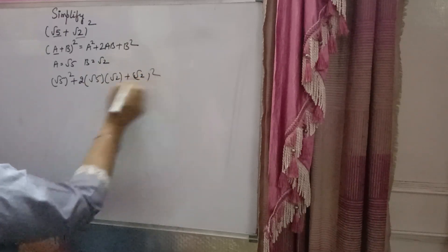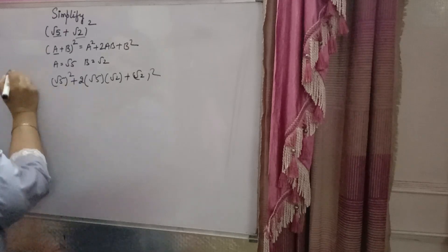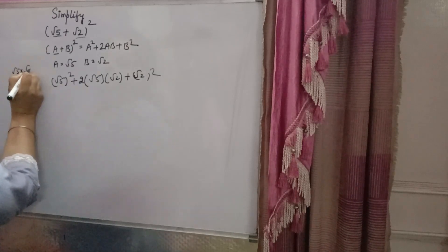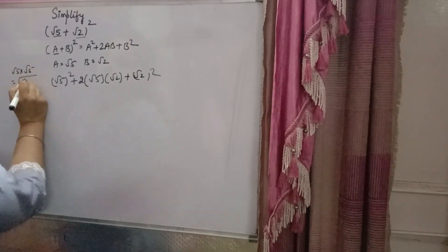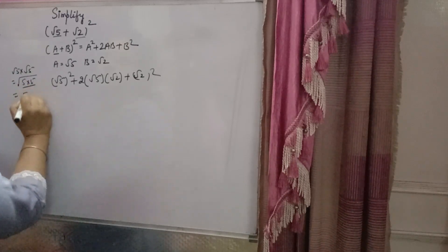(√5)² means √5 times √5. When you multiply √5 into √5, you will get 5. Whenever you are finding the square, you have to do pairing, so you get 5.